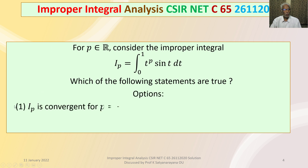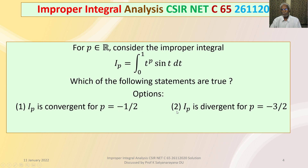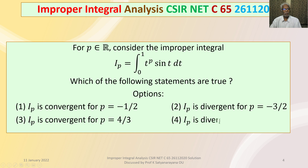Option 1: I_p is convergent for p = −1/2. Option 2: I_p is divergent for p = −3/2. Option 3: I_p is convergent for p = 4/3. Option 4: I_p is divergent for p = −4/3.